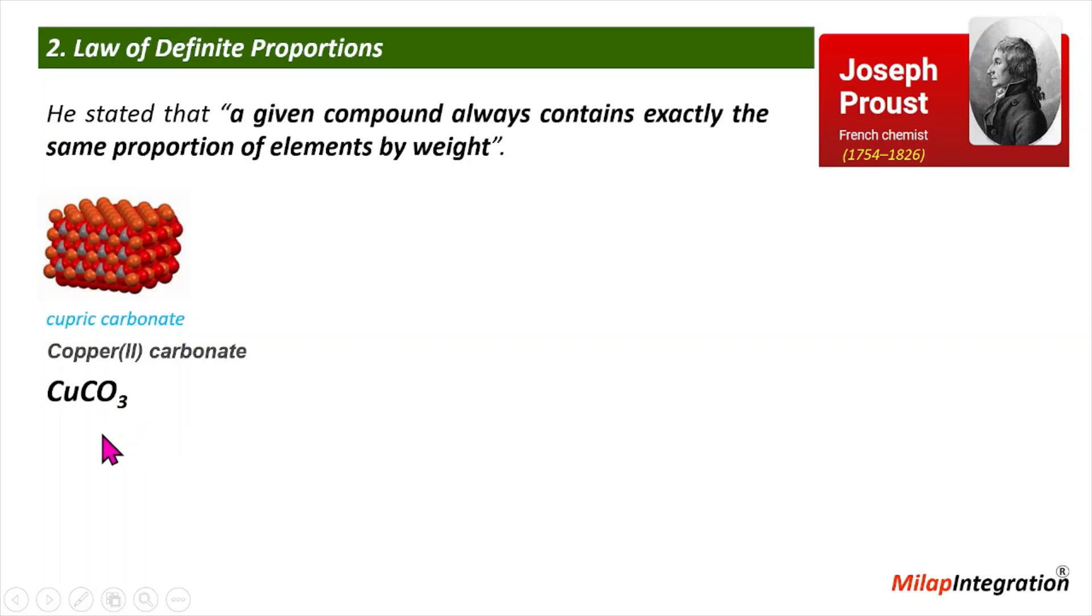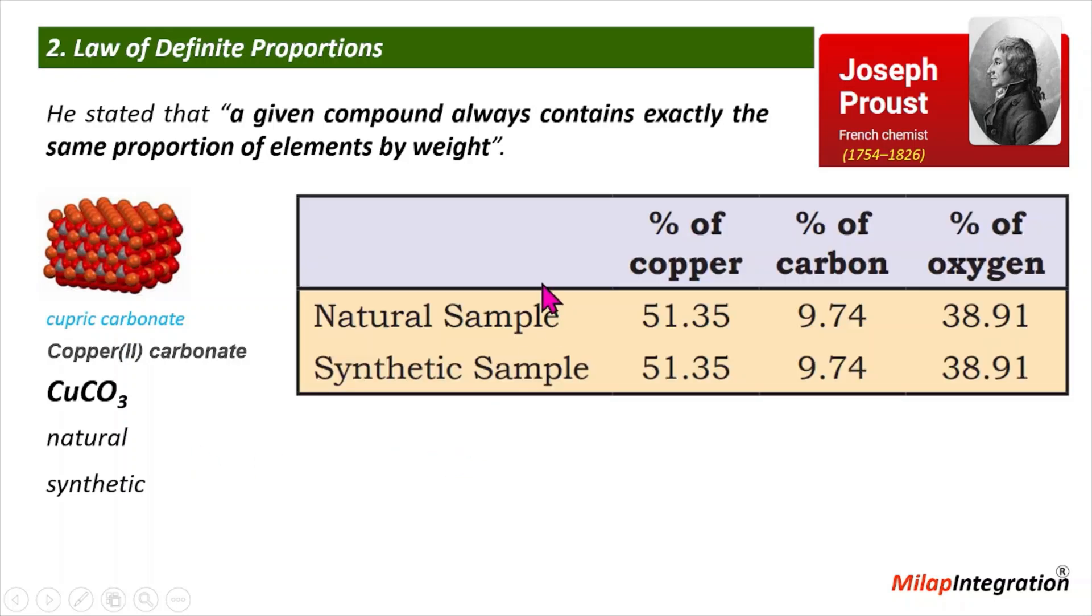If you see this compound, you get two kinds of samples: natural and synthetic. When you analyze the cupric carbonate, you will find the natural sample and the synthetic sample both have the same percentage of copper by weight, percentage of carbon by weight - the percentages are always fixed. The readings are exactly the same.